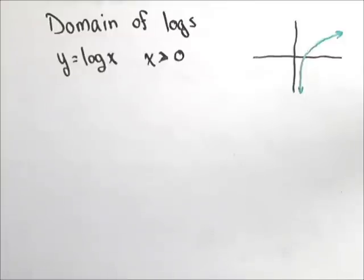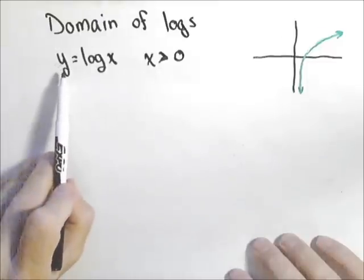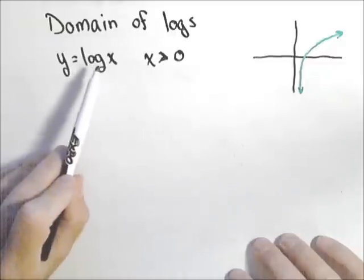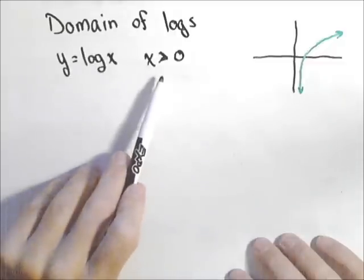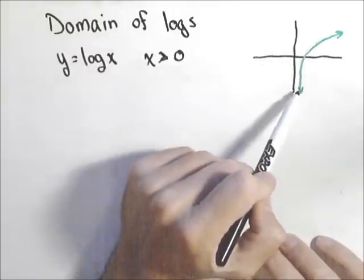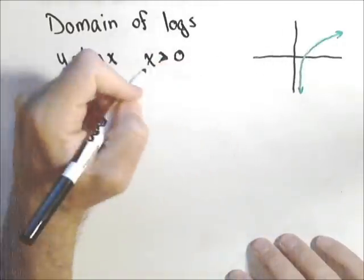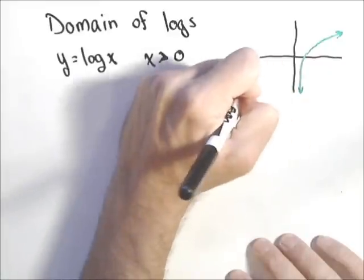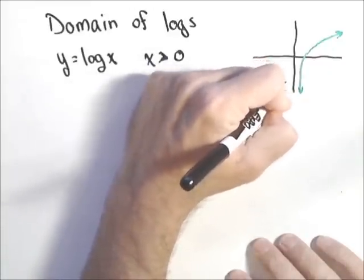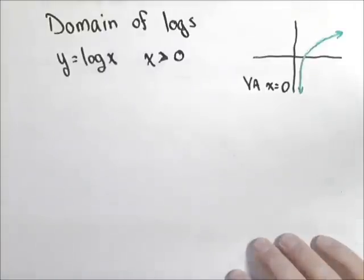In this video, we're going to talk about finding the domain of a logarithmic function and how to identify its vertical asymptote. In general, we have y equals log of x, or natural log of x, or log of any base of x. The domain is that x has to be greater than zero. The graph only has a domain of positive values, and it has a vertical asymptote at x equals zero — so the y-axis is a vertical asymptote.